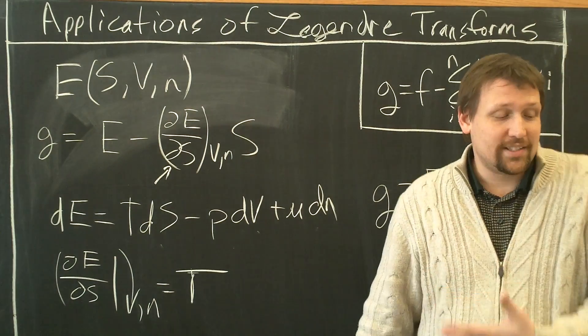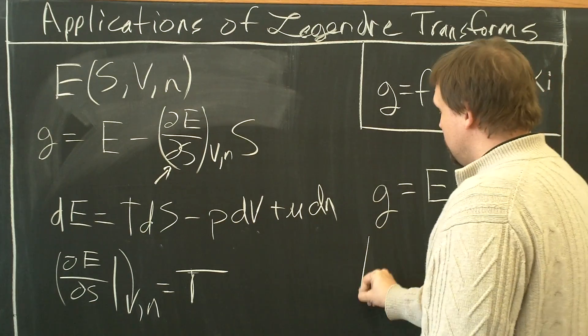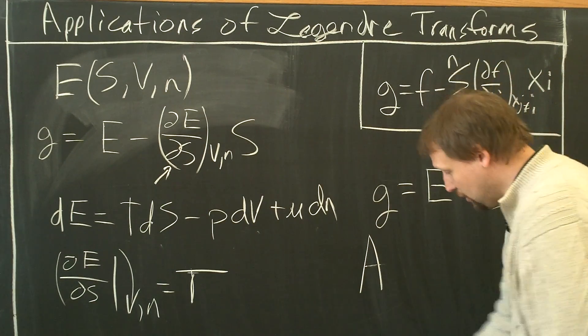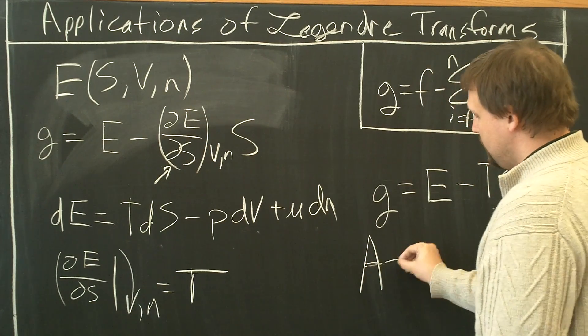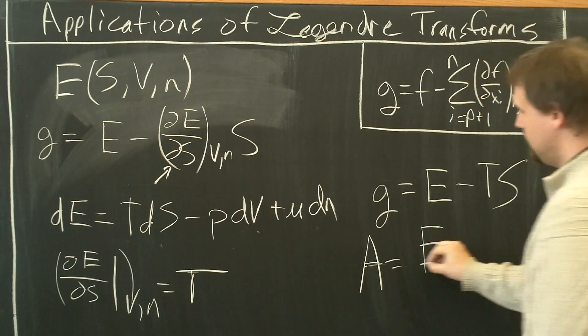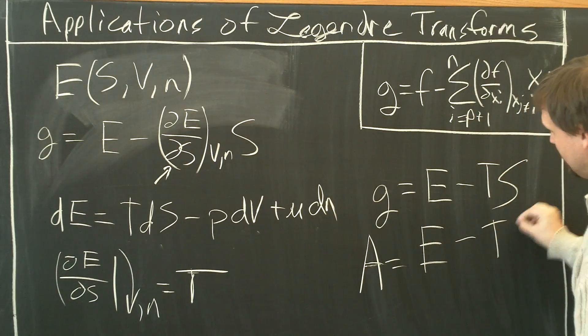little g, equals E minus TS. This is not little g, this has a definition. This is actually called the Helmholtz free energy, A, equals E minus TS.